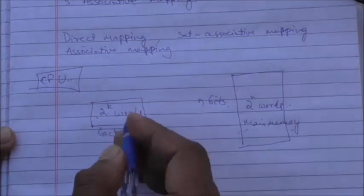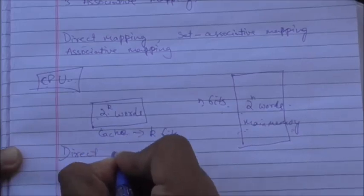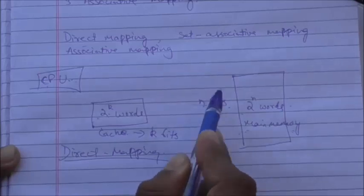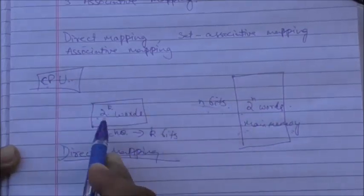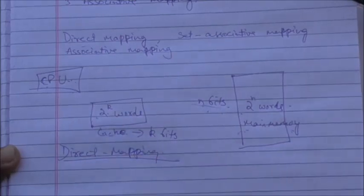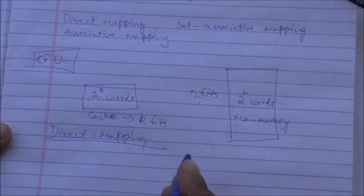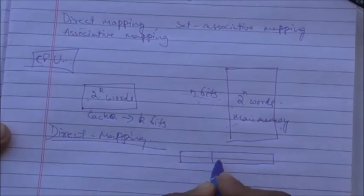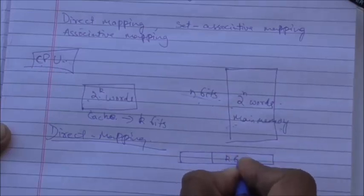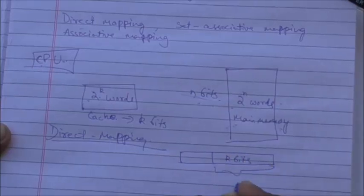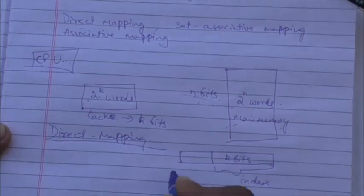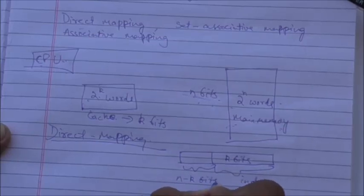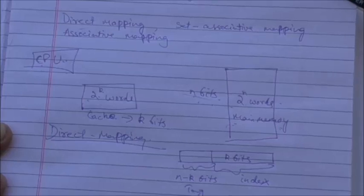In direct mapping, we organize cache in such a way that by using the n-bit address of main memory, the CPU can search the data item in cache memory. This n-bit address is divided into two parts: the rightmost k bits are called the index, and the remaining n minus k bits are called the tag.